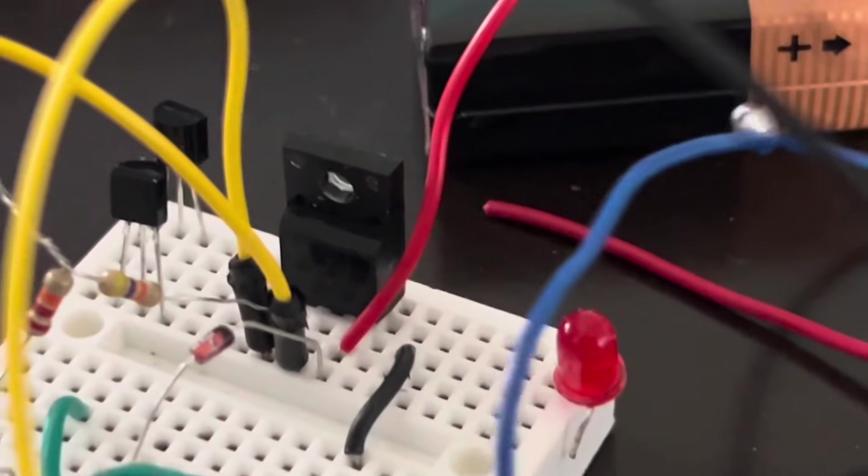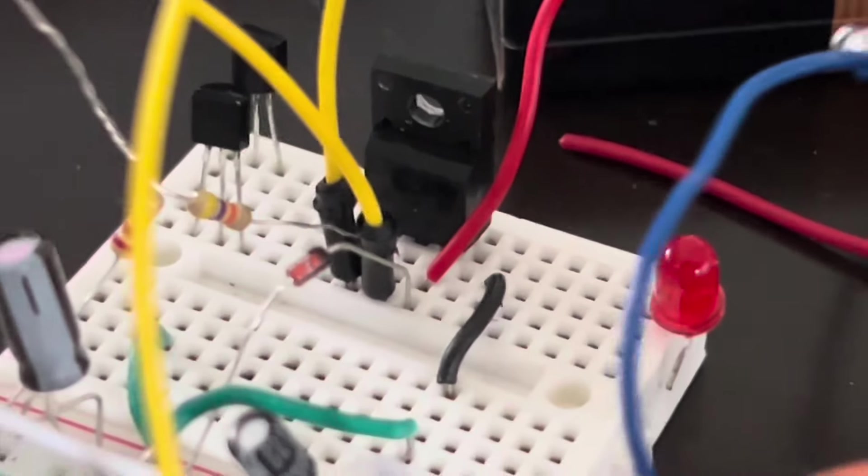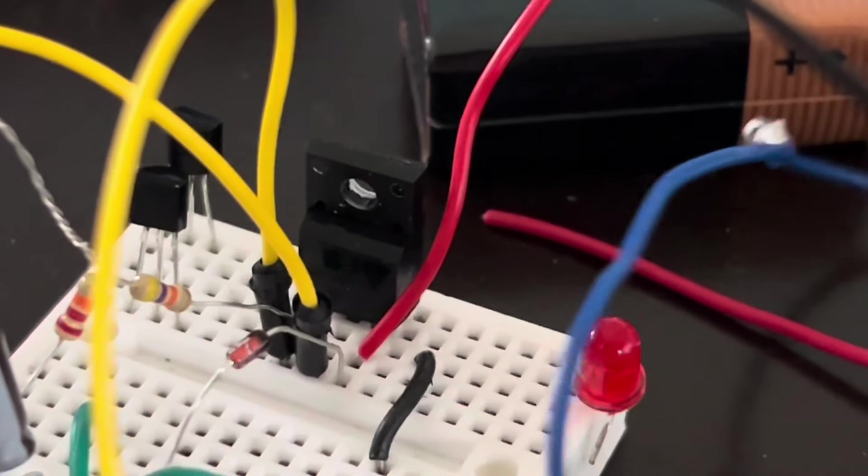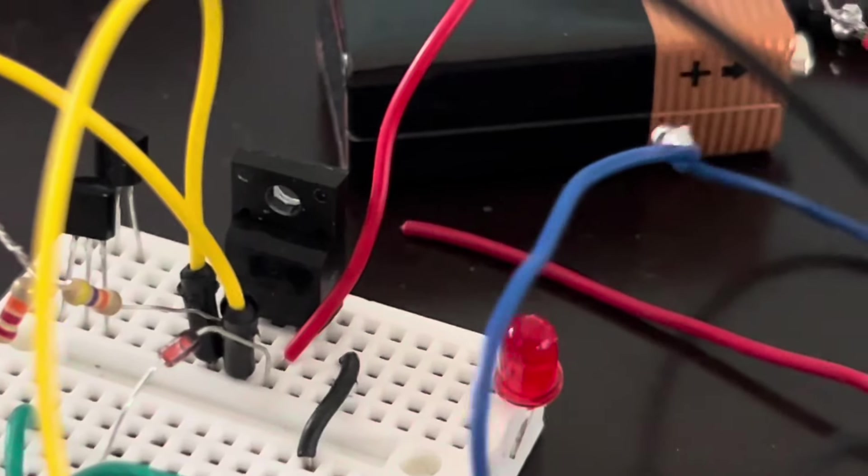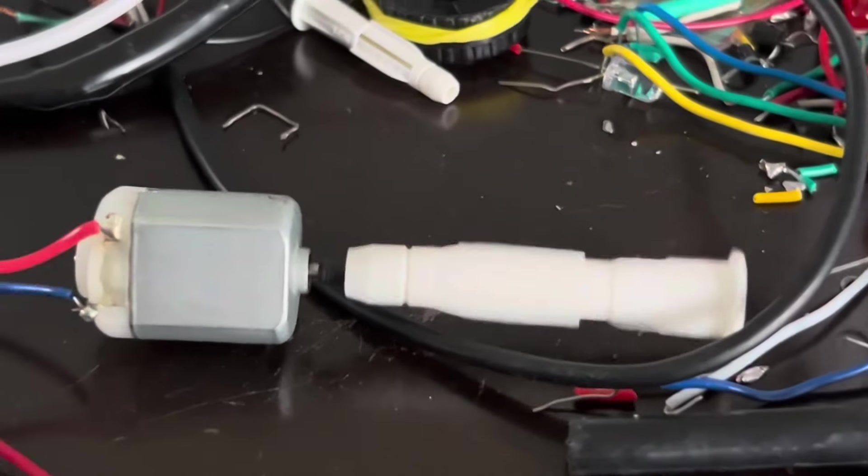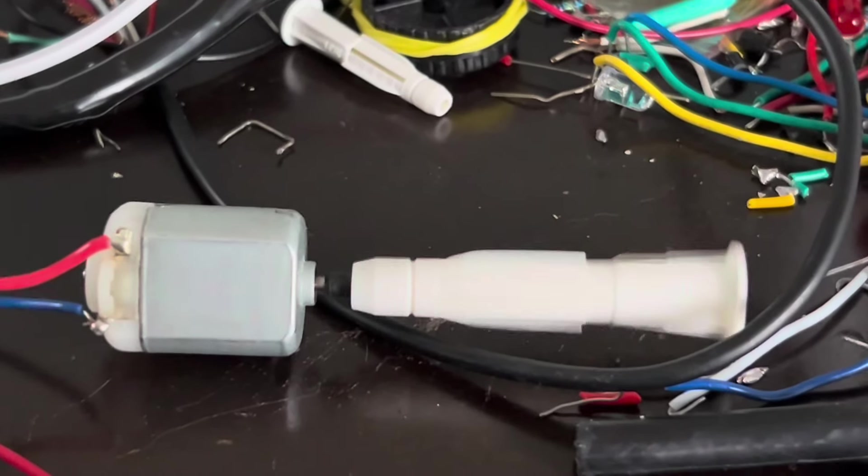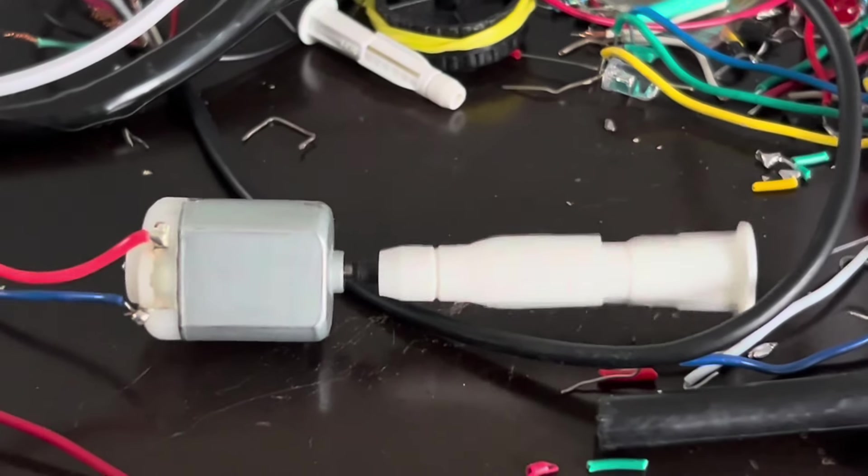And that's using the MOSFET here with a flyback diode and resistor to ground so it's not always on. And there it is. Now I just have to make an appropriate transmission for this thing. So here's the motor being acted upon by a PWM signal.